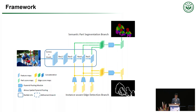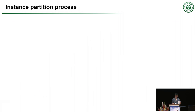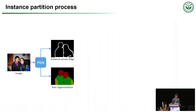As for the refinement branch, we integrate the segmentation and edge predictions back into the feature space and combine them with the extracted feature maps, which are finally fed into another two pyramid pooling modules to mutually boost segmentation and edge results. With the well-predicted part segmentation maps and edge maps, we then employ a simple instance partition process to generate instance-level human parsing.